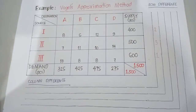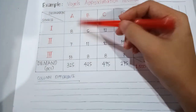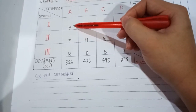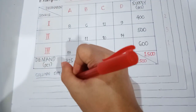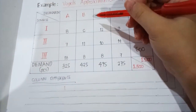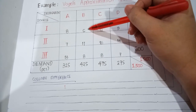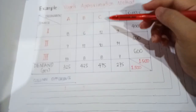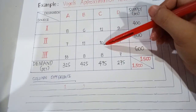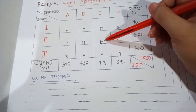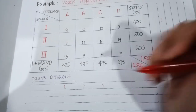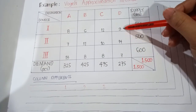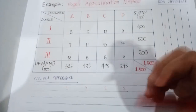Now for the column difference: column A has least cost 7 and second least 8, so the difference is 1. Column B has least cost 6 followed by 8, so the difference is 2. Column C has least cost 8 followed by 10, giving a difference of 2. Column D has least cost 7 followed by 9, giving a difference of 2. That completes step number one.